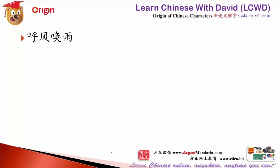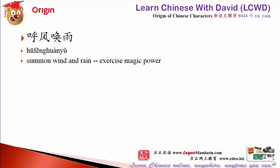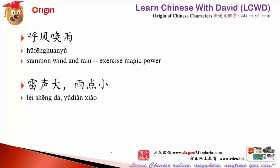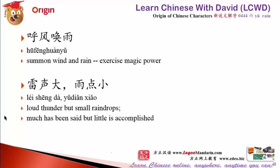呼风唤雨 — to call the wind and call the rain, to show magic power. It means a person who is very powerful and can demand what he wants. But sometimes people use 雷声大雨点小 — big thunder but little rain — meaning someone talks loudly or makes big claims but takes little action, like most politicians.